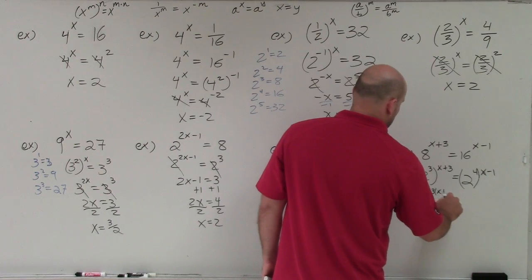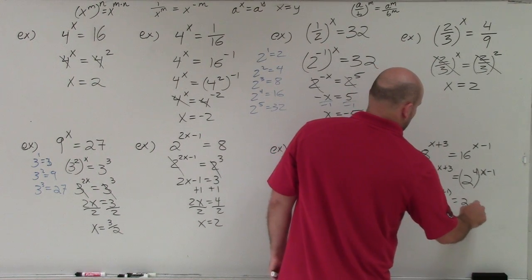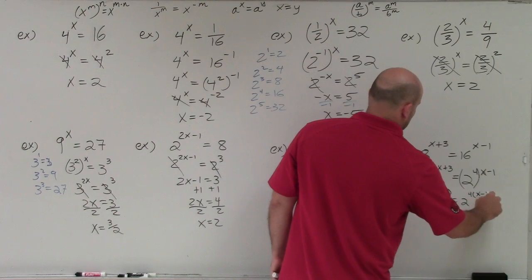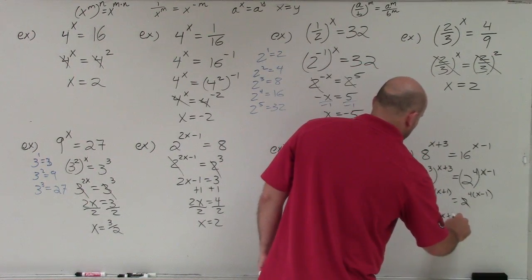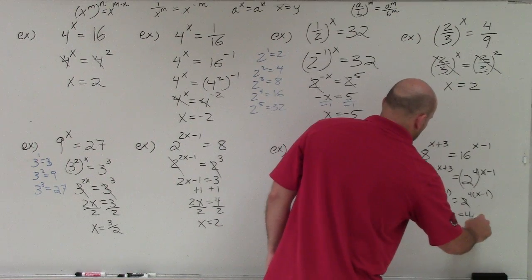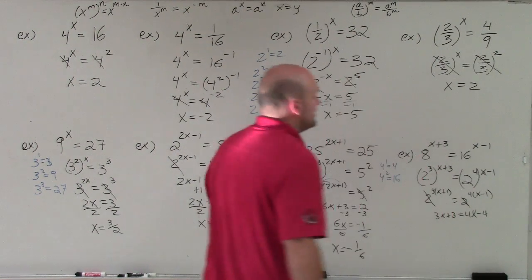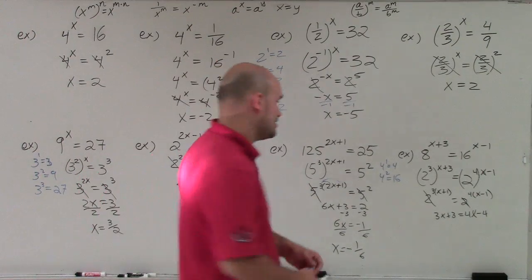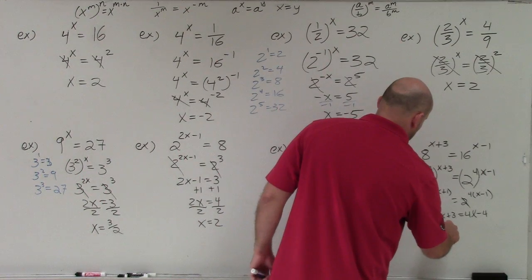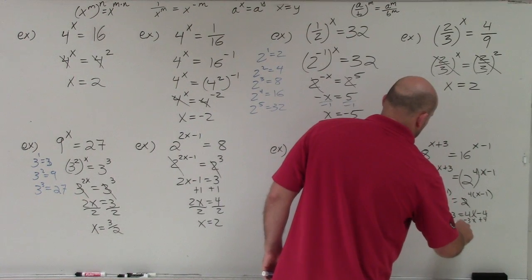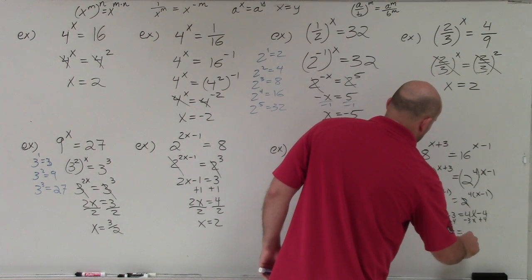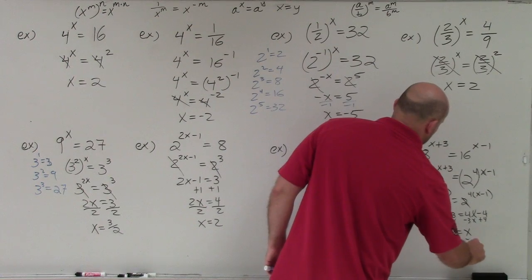Now I need to apply the distributive property. So it's 2 to the 3x plus 9 equals 2 to the 4x minus 4. Now I can get rid of my bases. I'm left with 3x plus 9 equals 4x minus 4. Now I just need to simply solve for x. I'm going to get the x's on the same side, and I get 7 equals x or x equals 7.